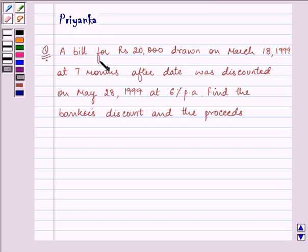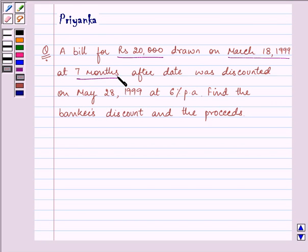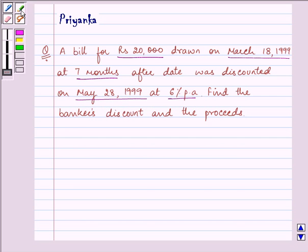It says: a bill for Rs. 20,000 drawn on March 18, 1999 at 7 months after date was discounted on May 28, 1999 at 6% per annum. Find the banker's discount and the proceeds.